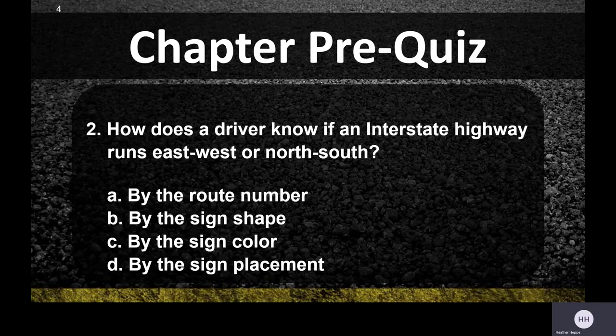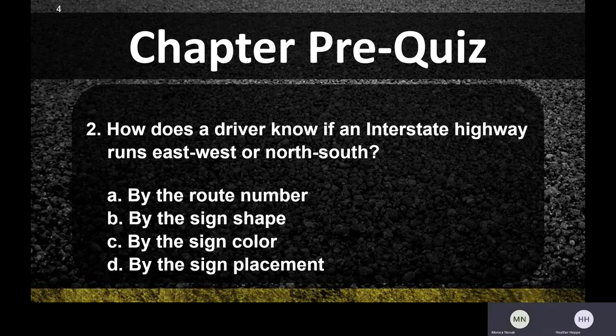The second question is: how does a driver know if an interstate highway runs east-west or north-south? One of the answers could be by the route number, by the sign shape, by the sign color, or by the sign placement. We'll look at this at the end to figure out the correct answer.